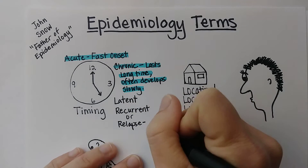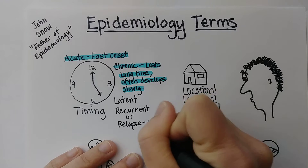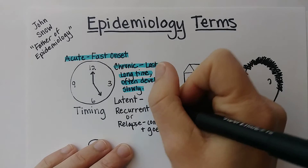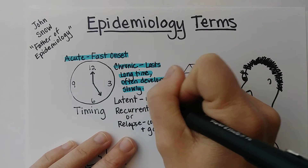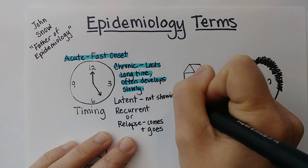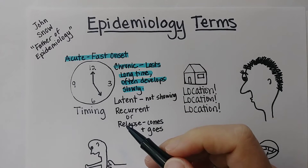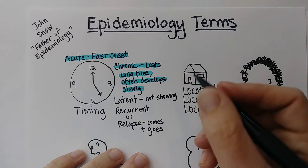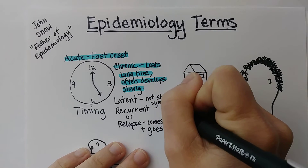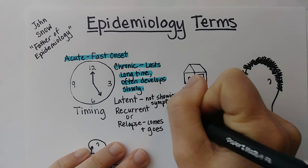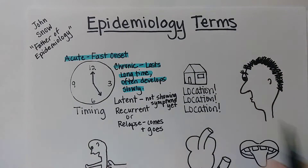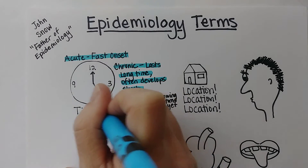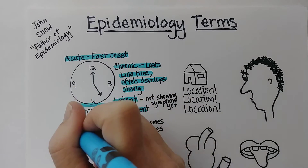Recurrent means it comes and goes — maybe it has different triggers. Latent means that someone could have the infection but not be showing symptoms. For example, if they got chickenpox and then the infection was hiding, and later on they got shingles from that latent infection. Recurrent or relapse refers to a disease that returns.